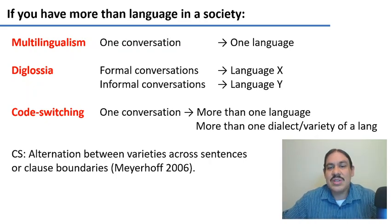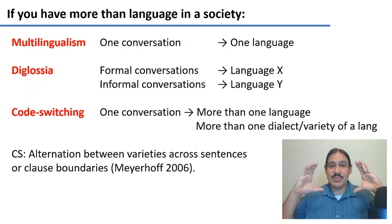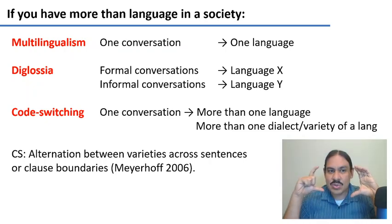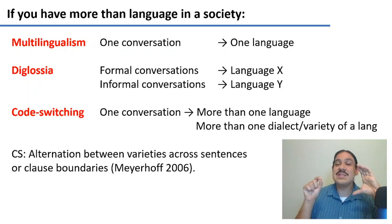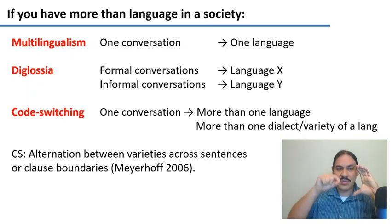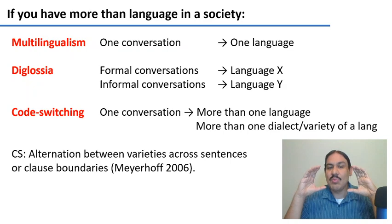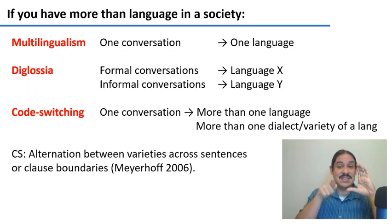Code switching is a situation where you can have one conversation, and within this conversation, you use more than one language — you go from one language to the other throughout the conversation. This is also true for conversations where you go from one dialect or variety of a language to another, like Standard American English and African-American Vernacular English. So code switching is a type of alternation between languages or varieties of a language within a single conversation, and the switch usually happens across sentences or within clause boundaries.